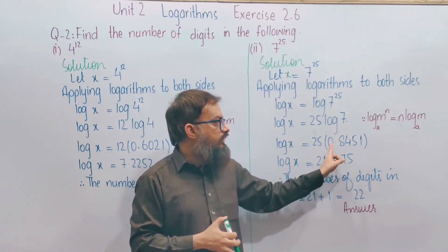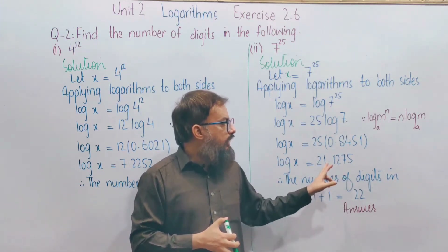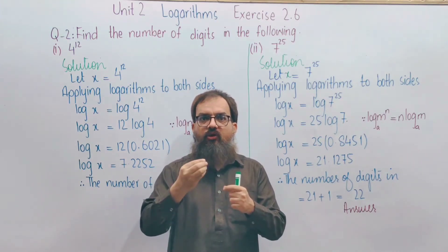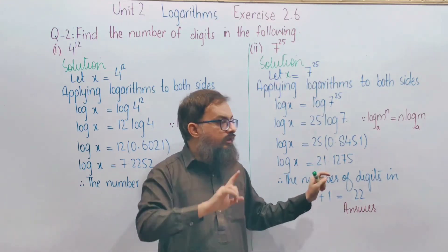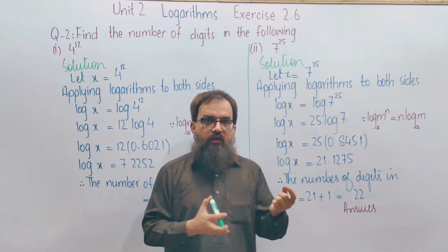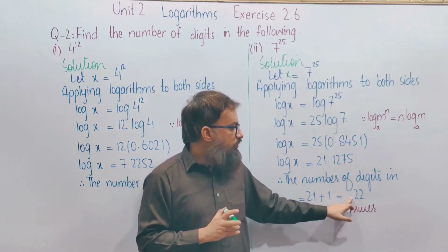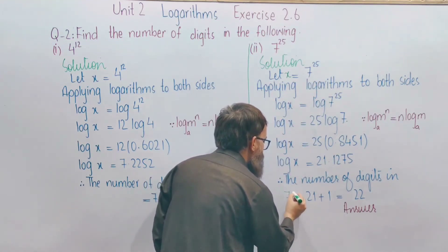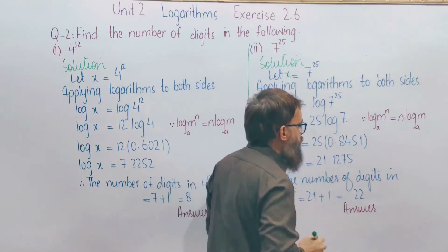So log 7 = 0.8451. We now multiply this value by 25. This gives us 21.something — meaning the characteristic is 21. When we take the antilog and get the answer, it will be 21 digits ahead of the first digit after the decimal point. So including the first digit, that is 21 plus 1 digits.